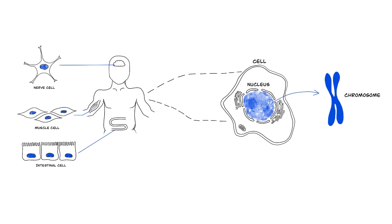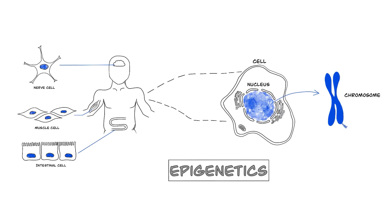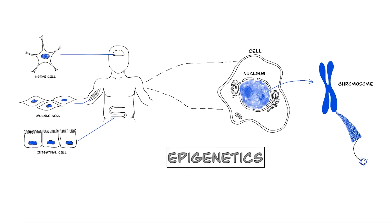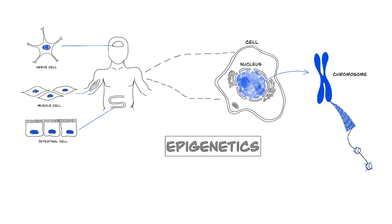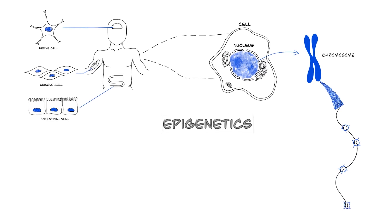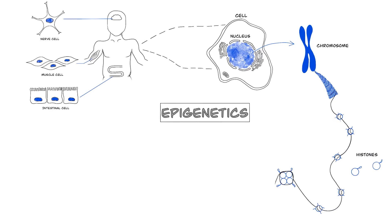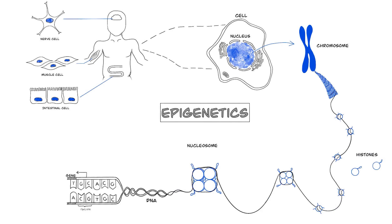The cells in our body are different due to epigenetics. Epigenetics means on top of or above genetics and refers to external modifications or marks on DNA or DNA-bound proteins that act as light switches to turn genes on or off. What genes are turned on or off defines a muscle cell from a nerve cell.